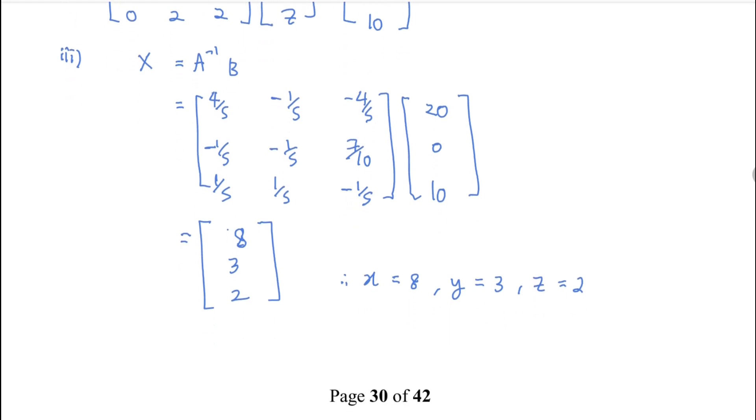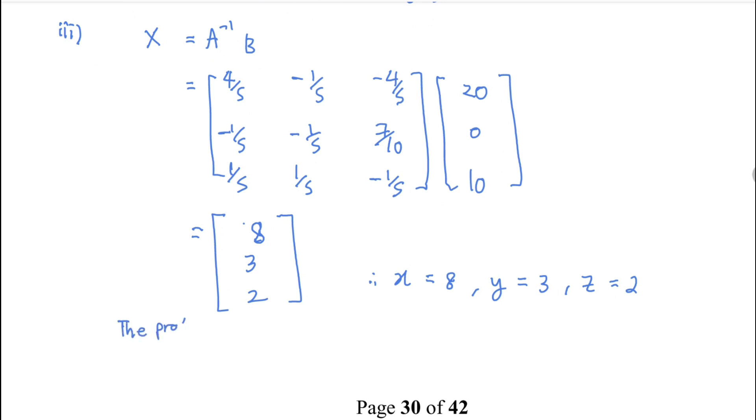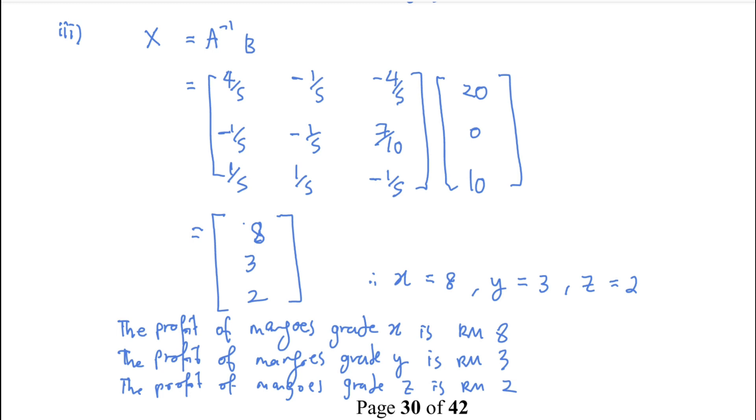Then for the conclusion: the profit of mangoes grade X is RM8, the profit of mangoes grade Y is RM3, and the profit of mangoes grade Z is RM2. Hence, there is the solution. Do you understand?